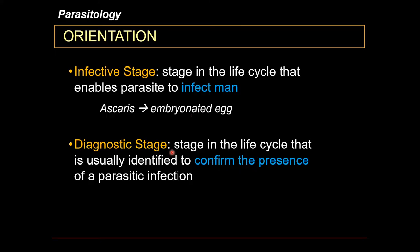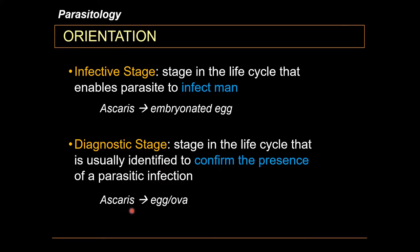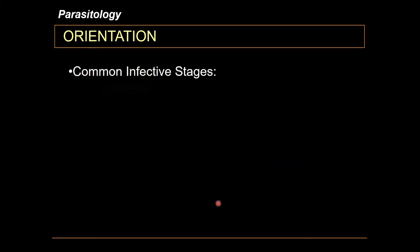The diagnostic stage is defined as the stage in the life cycle that is usually identified to confirm the presence of a parasitic infection. For Ascaris, you diagnose infection not just by seeing the worm, but by examining a stool sample and identifying Ascaris ova or eggs in that sample.